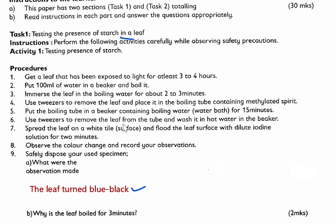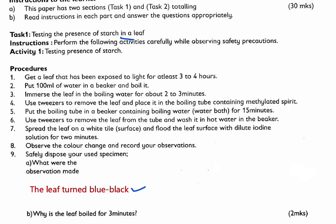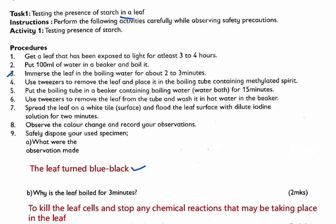Part B asks: why was the leaf boiled for 3 minutes? You can see from step number 3 that you boil the leaf for about 2 to 3 minutes. This is a very common question, even in section A. The reason for boiling is to kill the leaf cells and stop any chemical reactions that may be taking place in the leaf. Those are the two marks.